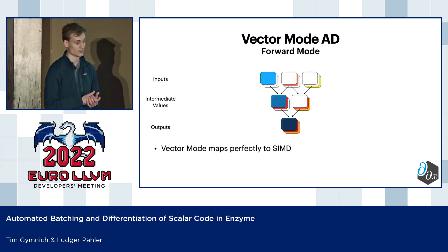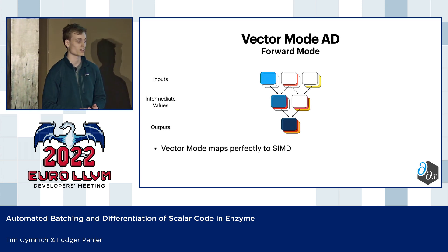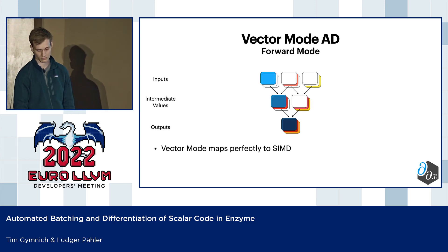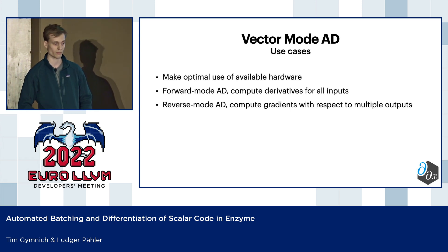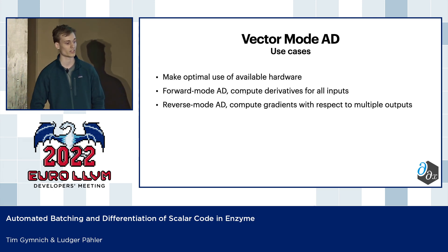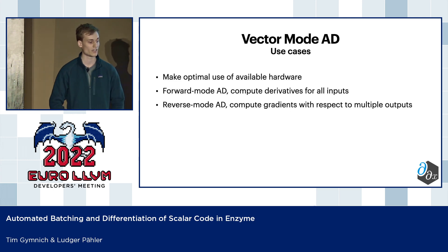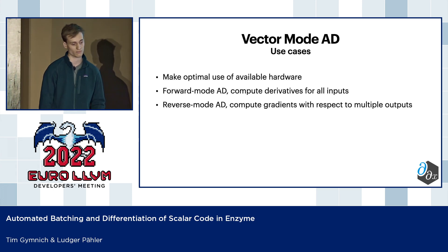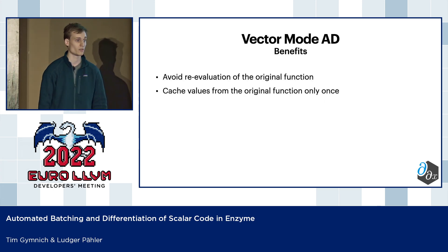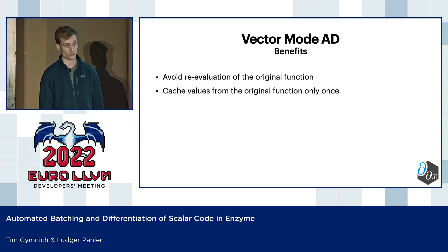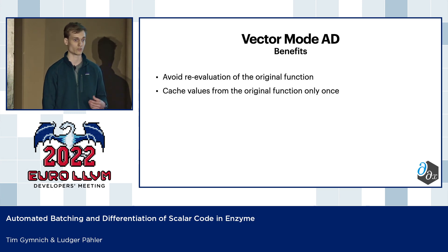If we take those computations and overlay them, we see that this approach perfectly maps to SIMD. The use cases here are mainly that we can make optimal use of our hardware. If you wanted to use forward mode AD to compute derivatives for all of the inputs, we could use vector mode here quite efficiently. And in the case of reverse mode, we can also get gradients for functions that have multiple outputs. The benefits of vector mode in general are that we can avoid re-evaluation of the original function for every derivative we would compute.